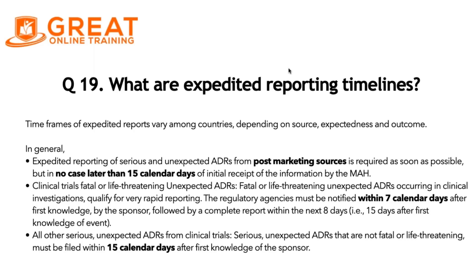So these are the timelines from the ICH guidelines. In summary: for clinical trial SUSARs with fatal or life-threatening seriousness criteria, the initial case must be submitted within seven calendar days. All other serious events must be submitted within 15 calendar days. For post-marketing sources, irrespective of the different seriousness criteria, all serious and unexpected ADRs must be submitted within 15 calendar days.